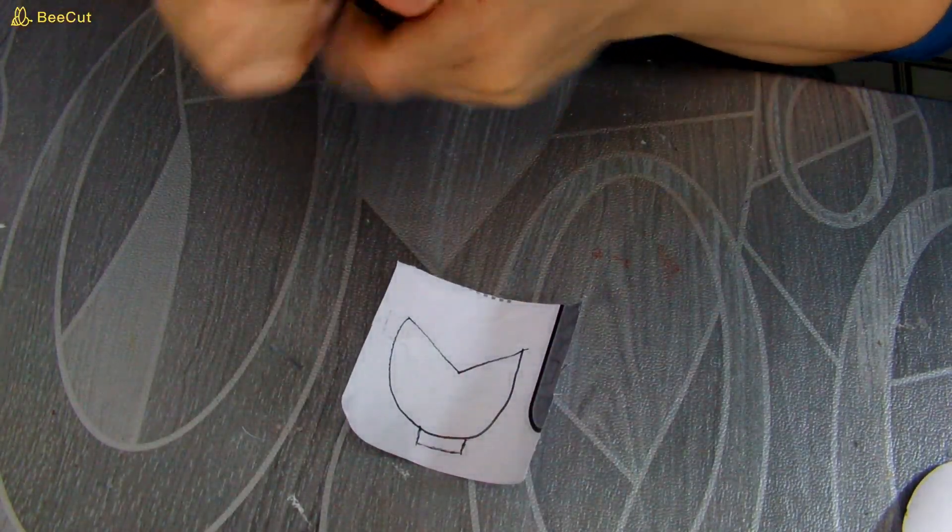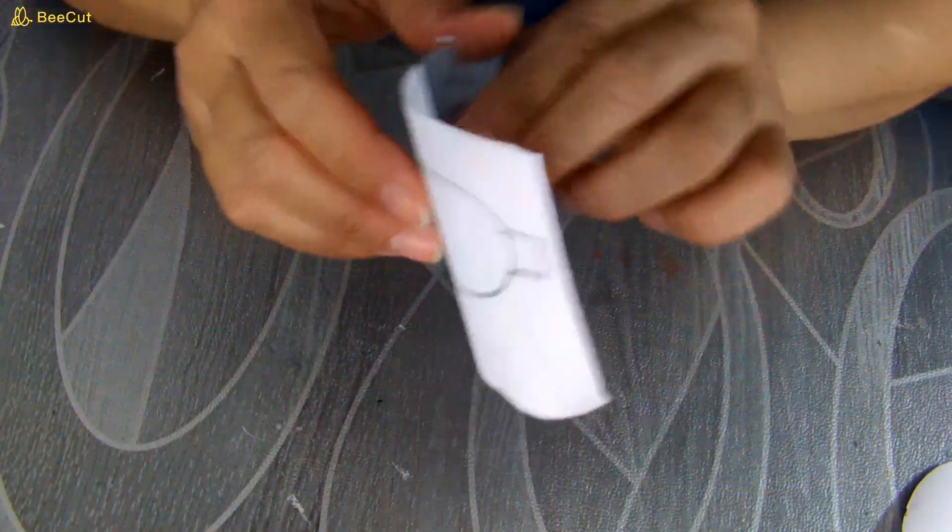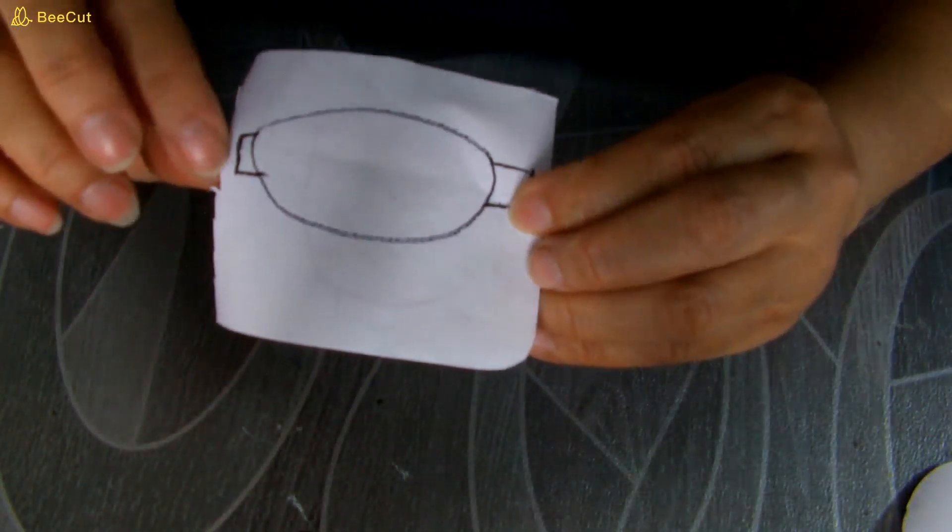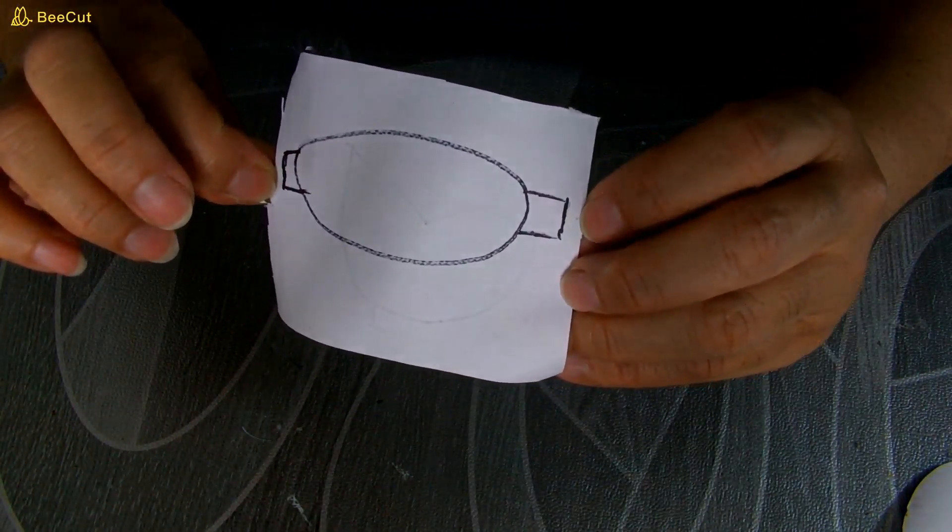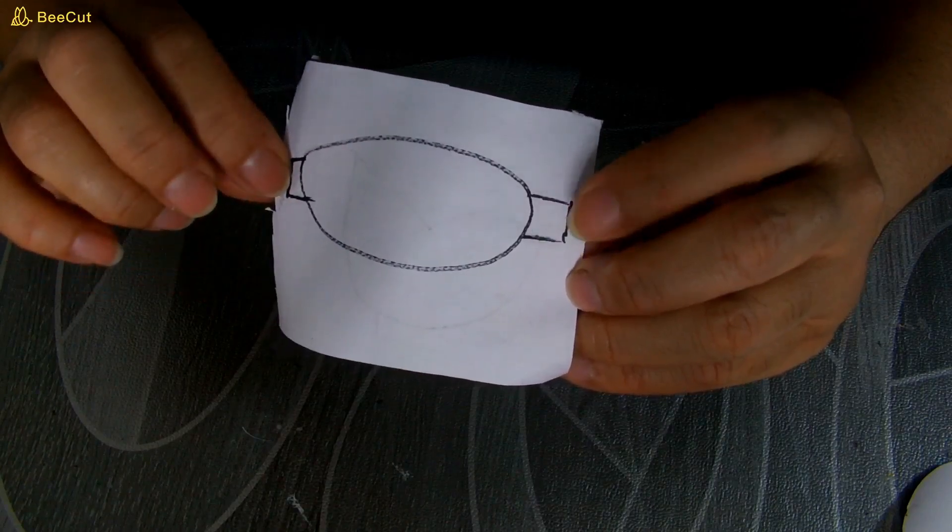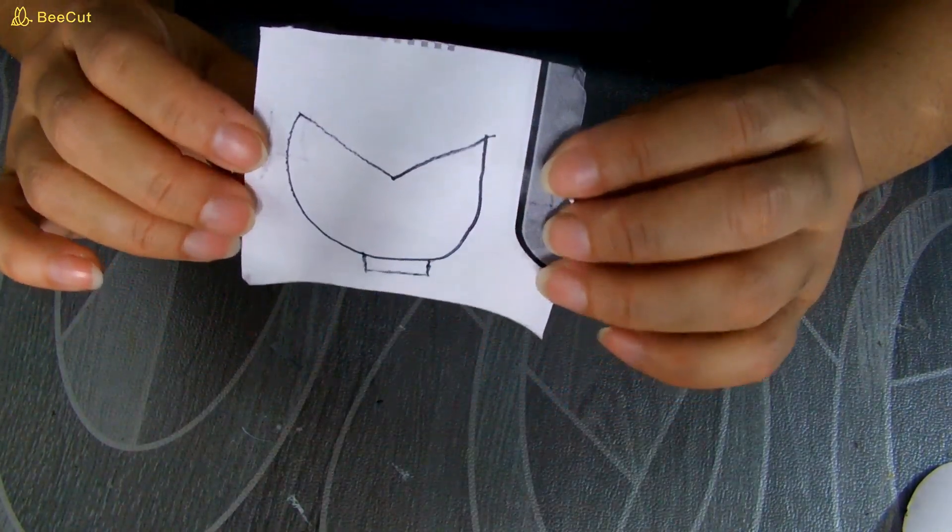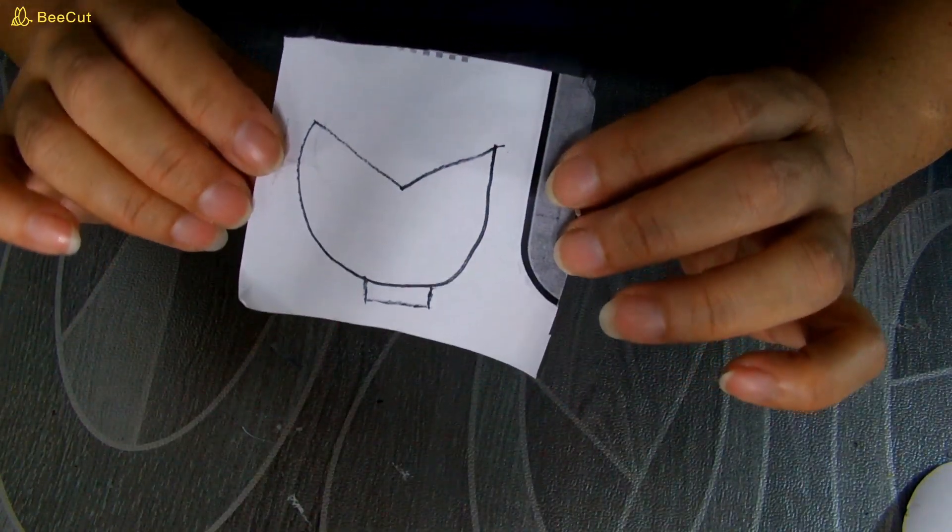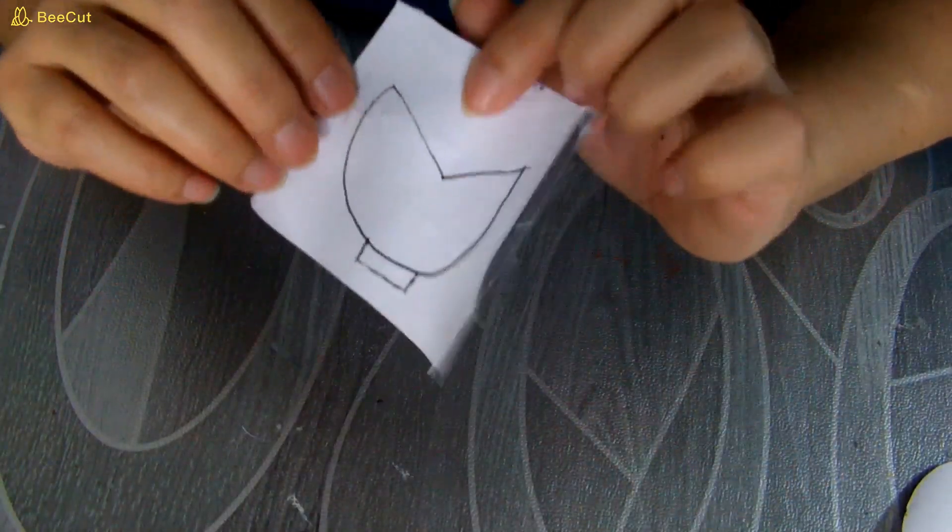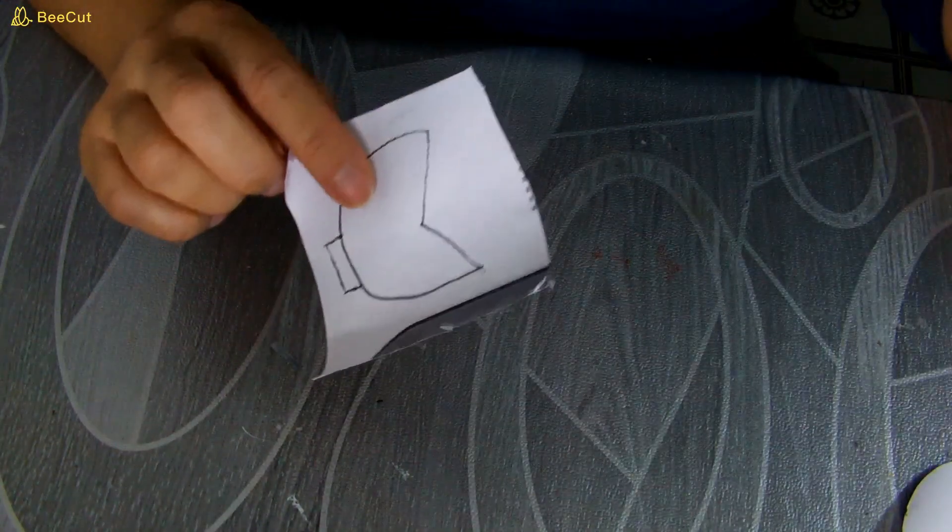Esto van a ser nuestros moldes, muy fácil de hacer. Vamos a hacer este así ovalado con dos pestañitas, una más larga que otra. Y el otro va a parecer la cola de una sirena. Después que lo tenemos así lo vamos a recortar.